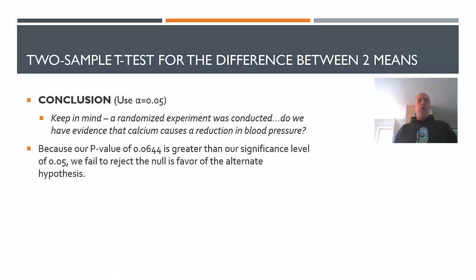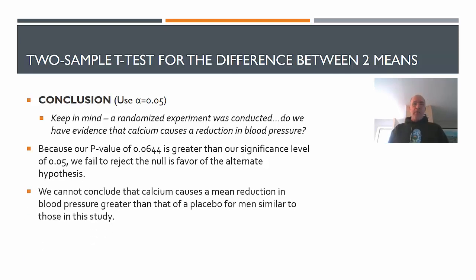Two statements you need to write. Because our p-value of 0.0644 is greater than our significance level of 0.05, we fail to reject the null in favor of the alternate. This means we cannot conclude that the calcium causes a mean reduction in blood pressure greater than that of a placebo for men similar to those in the study. So we did see more of a decrease, but not a statistically significant one. We cannot prove cause and effect here.